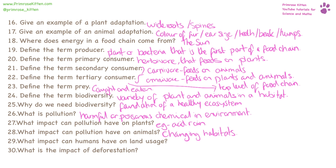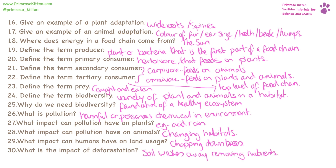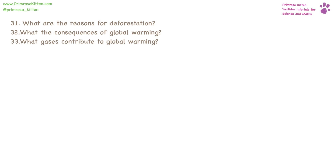Humans generally dictate land usage. For example, we chop down large swathes of rainforest to put fields in. Deforestation can have a devastating impact on the land. The roots from the trees generally keep the soil in place. If the trees aren't there to keep the soil in place, the soil will generally wash away, leaving the earth barren. There are lots of reasons for deforestation — this could be that people want to use the wood from the trees or they want to use the land for something.